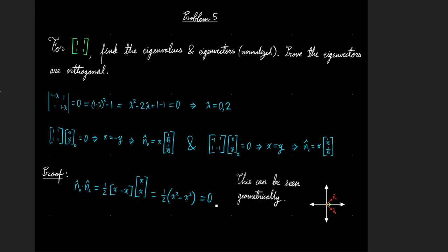Problem five, just a linear algebra problem. For this given matrix, find the eigenvalues and normalized eigenvectors, and then prove that they are orthogonal. Again, to find eigenvalues, you subtract the eigenvalues through the diagonal, and find the determinant of that set equal to zero, which just means that you're finding lambda for this equation right here. And the solutions for this are lambda equal to zero, and lambda equal to two.